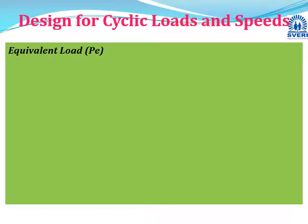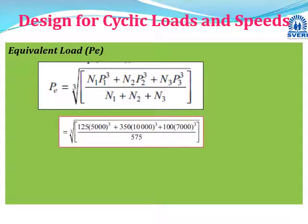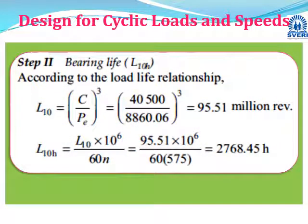Now calculate the equivalent load pe. Using the formula: pe = cube root of [(n1·p1^3 + n2·p2^3 + n3·p3^3) / (n1 + n2 + n3)]. Substituting n1 = 125, p1 = 5000, n2 = 350, p2 = 10,000, n3 = 100, p3 = 7000, and N = 575, we get pe = 8860 N. Next, using load-life relationship: L10 = (C/pe)^3 = (40500/8860)^3 = 95.51 million revolutions.